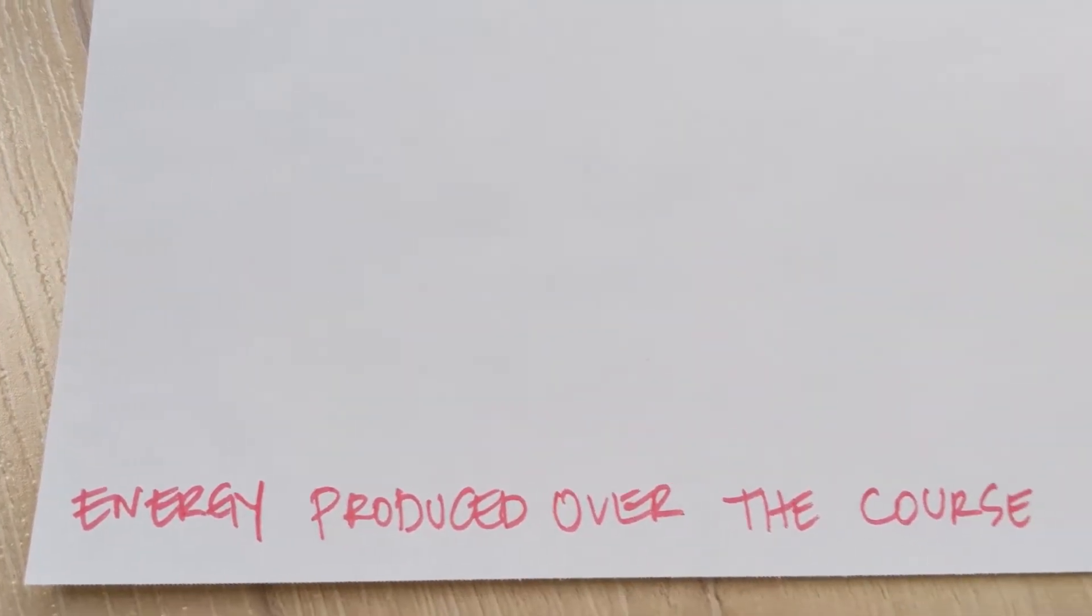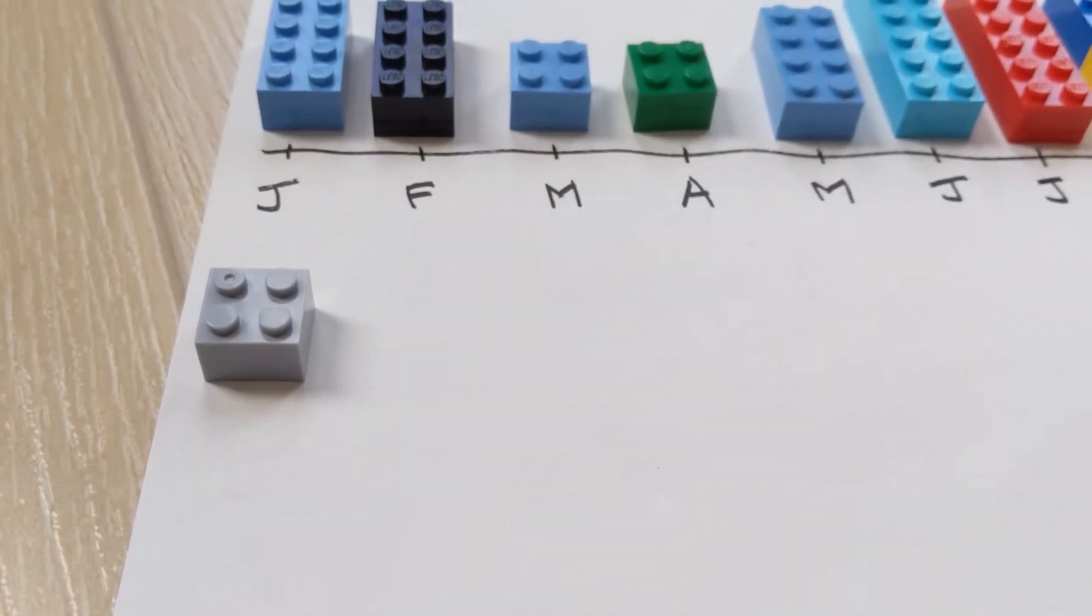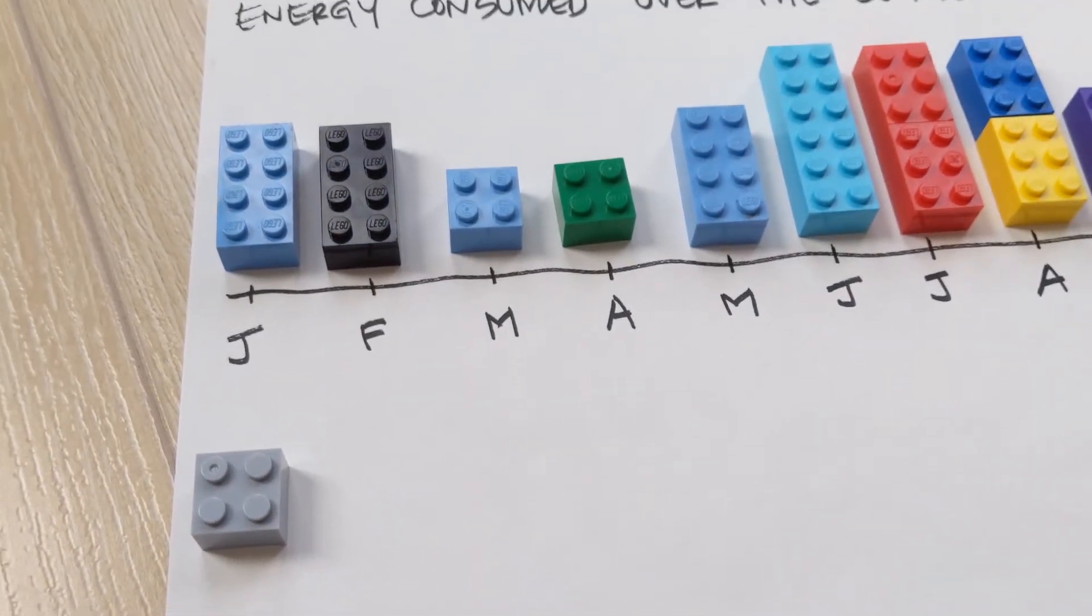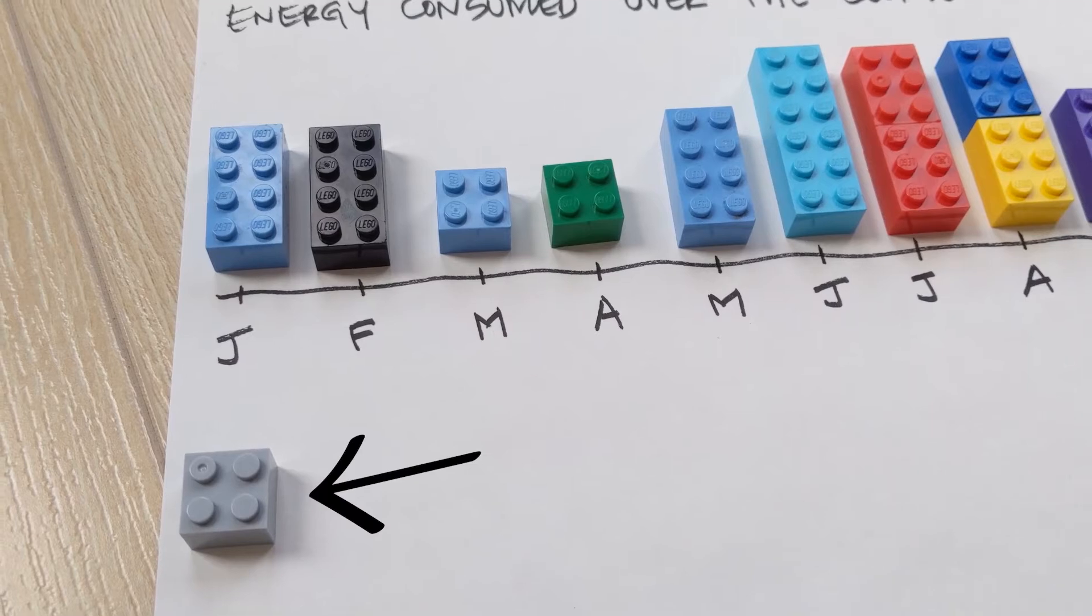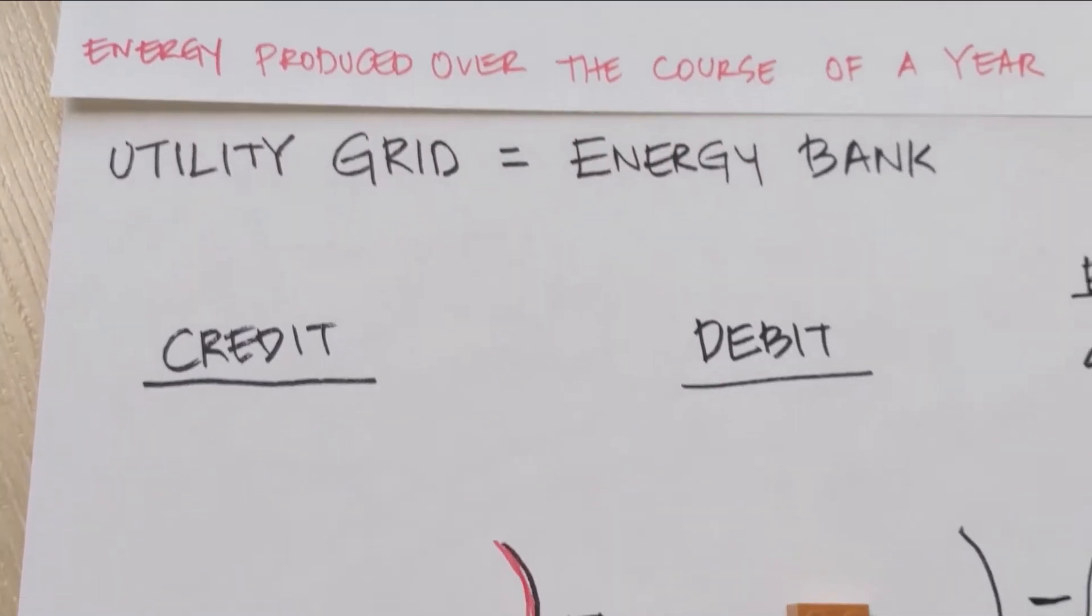So, how many units of energy does the solar panel make in January? Two units. In this case, one unit. But we use two units of energy. But we make one unit. So, it is debit.